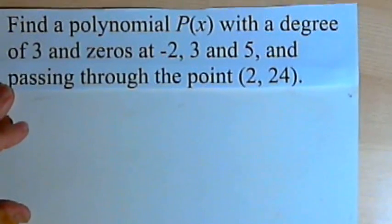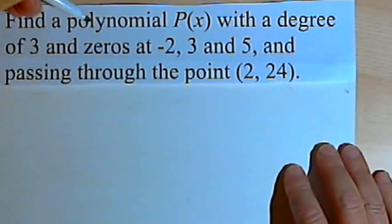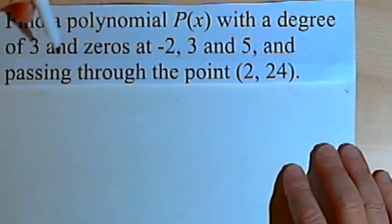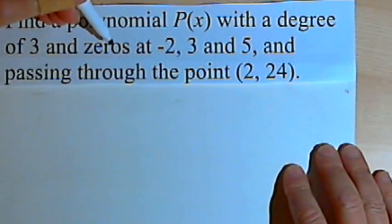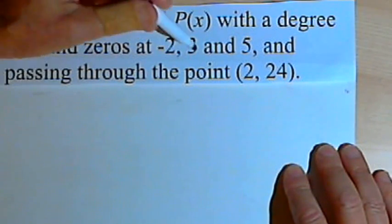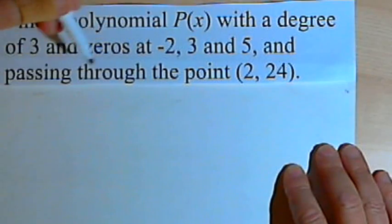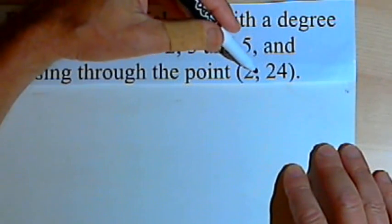So here's the first problem. Find the polynomial P with a degree of 3 and zeros at negative 2, 3 and 5, and passing through the point (2, 24).